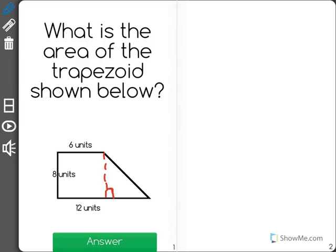And now we have a rectangle, which is here, and a right triangle, which is here.